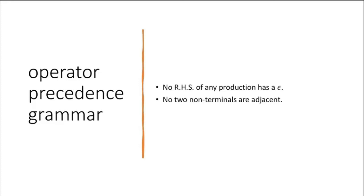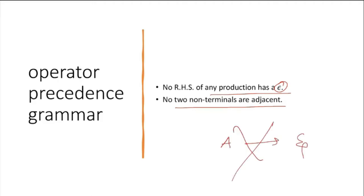This grammar has two conditions: no right-hand side of any production rule has epsilon, and no two non-terminals are adjacent. So there is no production rule which looks like A→ε, and you will never get something like A→BC where all of them are non-terminals.